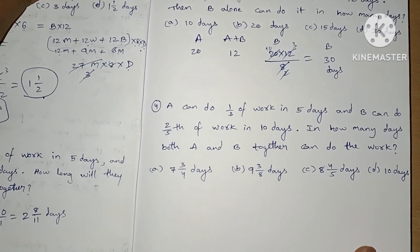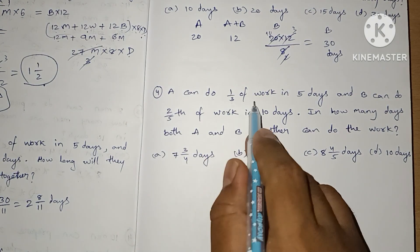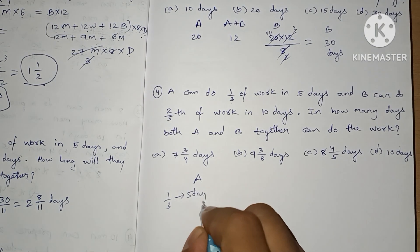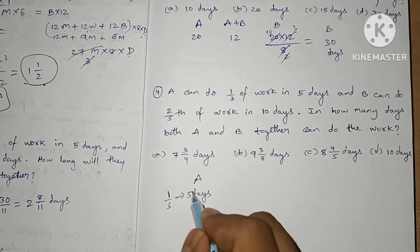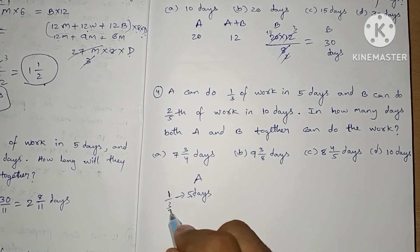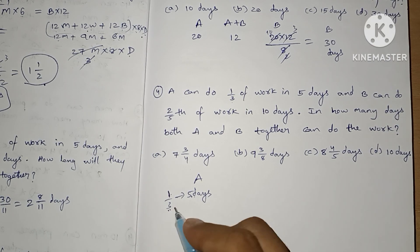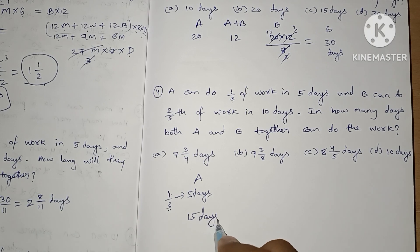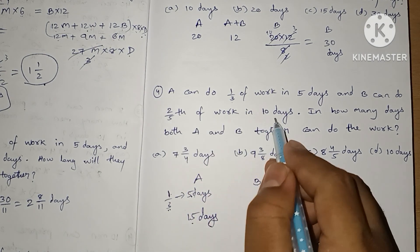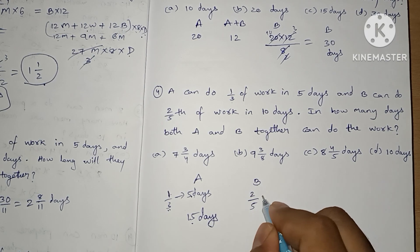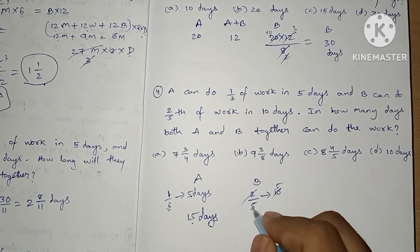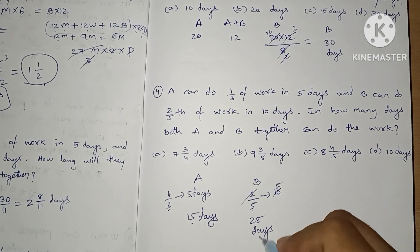Let's see one more question. A can do 1/3 of work in 5 days, meaning one part of work in 5 days. There are 3 parts total, so 3 × 5 = 15 days — A can complete the whole work in 15 days. B can do 2/5 of work in 10 days, meaning 2 parts in 10 days. So 5 parts will be 5 × 5 = 25 days. B takes 25 days.